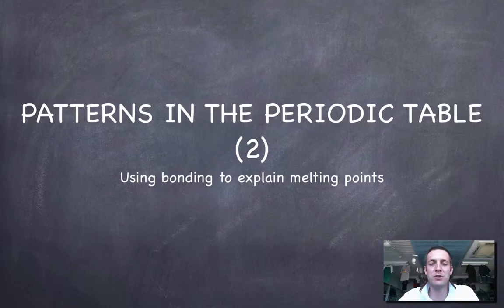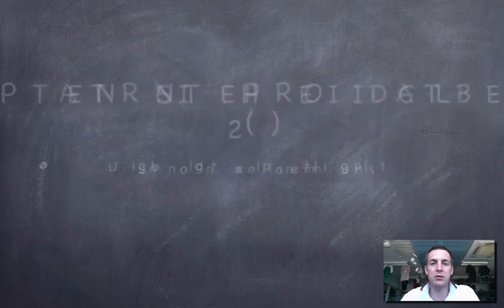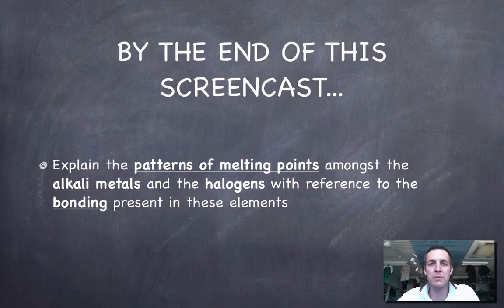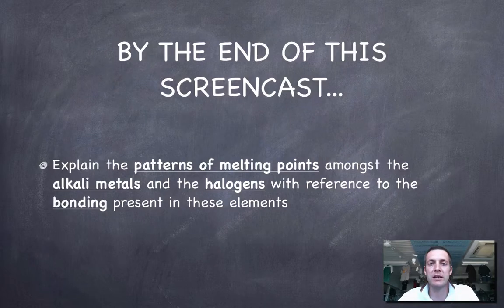Hello and welcome to this film which is all about patterns in the periodic table. Instead of discussing things like atomic and ionic radius, we're going to be looking at melting points. Hopefully by the end of this film you'll be able to discuss the melting points of two particular groups of the periodic table—the alkali metals and the halogens—and you'll be able to explain the patterns that we see in terms of the bonding that's present in these elements.